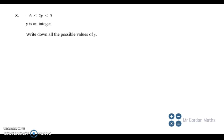Okay, number 8. We've got some inequalities and it says 2y is less than 5, but it's also greater than or equal to minus 6. y is an integer, so this means a whole number.